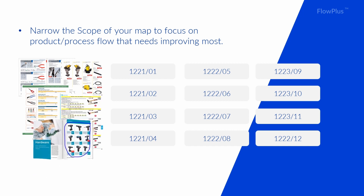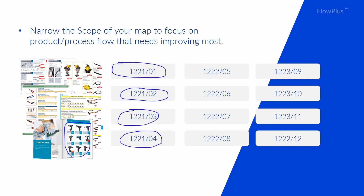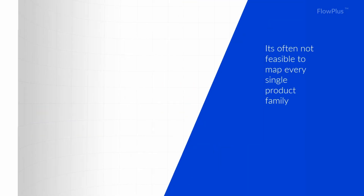For example, imagine if your company produces 50 different product variations, which is often the case. If we were to map the intricacies of every single variation and the unique product flow of every one, we would spend months and likely burn out. Remember, continuous improvement is about small steps and gradual progress leads to perfection.